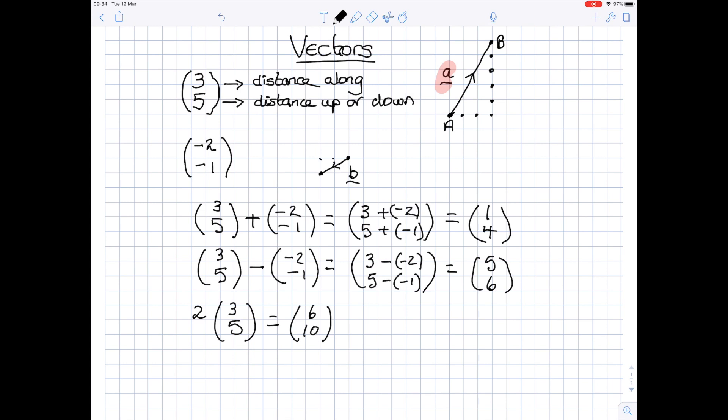If I do the same thing with the bottom vector, let's assume we're going to do four lots of (-2, -1). Four times minus two is minus eight, and four times minus one is minus four.